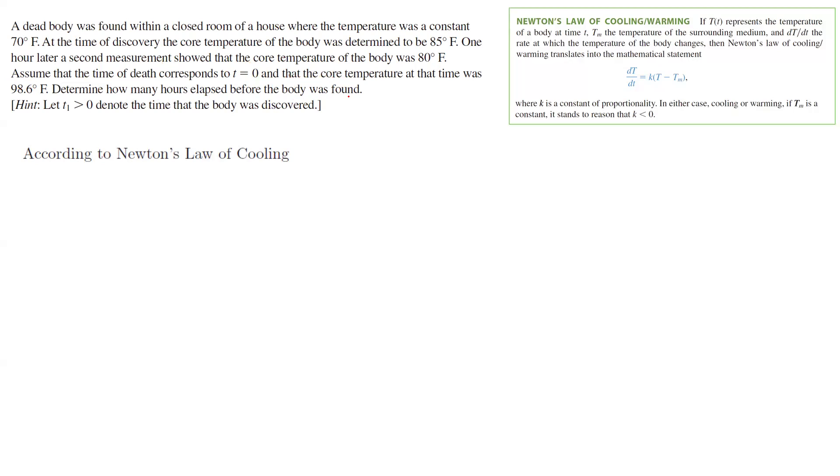According to Newton's law of cooling, we know that the rate of change of the temperature with respect to time is equal to K times T minus T sub m. As you remember, Tm is the ambient temperature and it is a constant value. K is also called the constant of proportionality. So the rate of change of the temperature with respect to time is K times T minus T sub m.